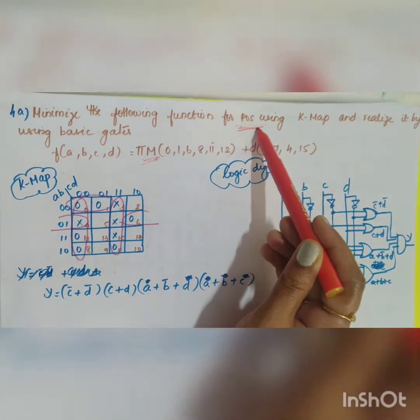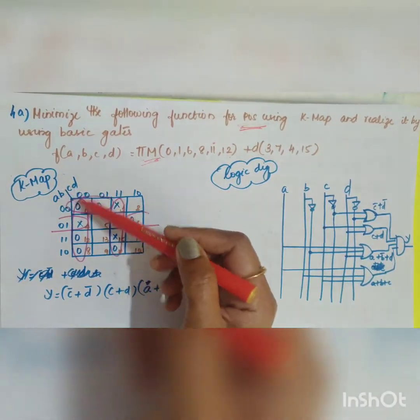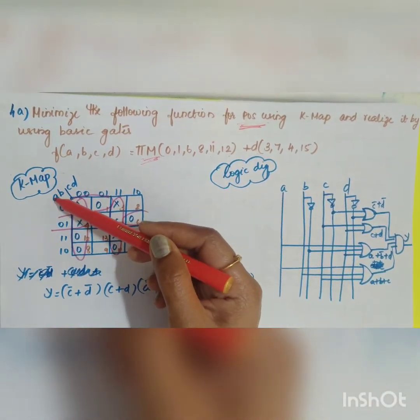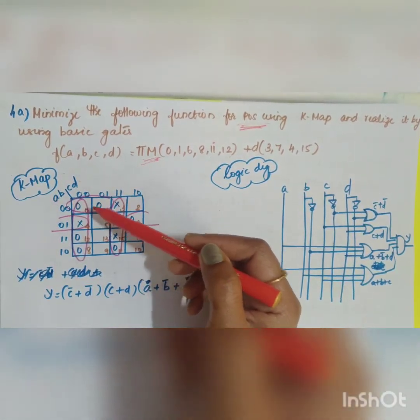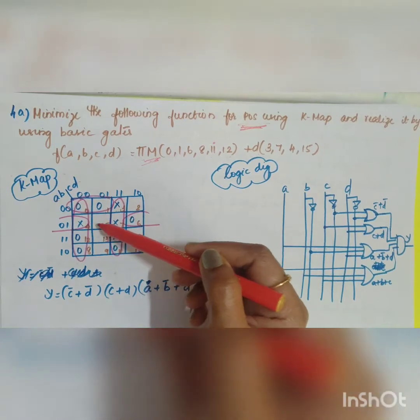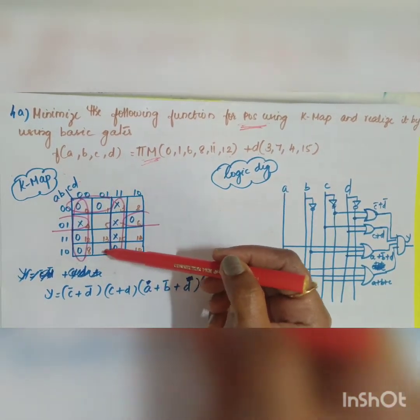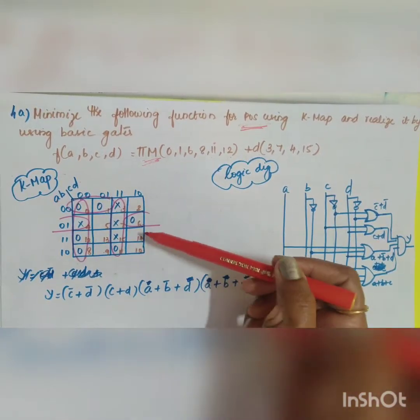You have to solve it using product of sum. How can you draw your K map? Variables are a b c d. What will be your value 0 1 2 3 4 5 6 7 8 9 10 11 12 13 14 15.